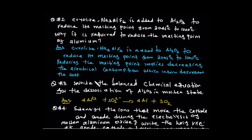High melting point means you must use more electrical energy. By reducing the melting point with cryolite, you save energy. The purpose is to reduce electrical consumption and therefore reduce cost.